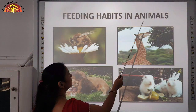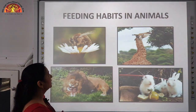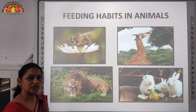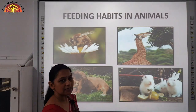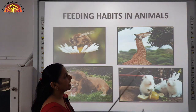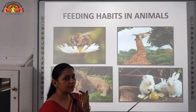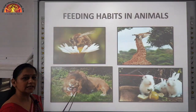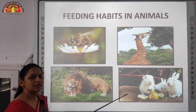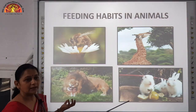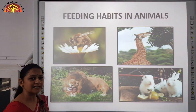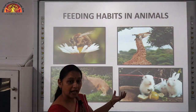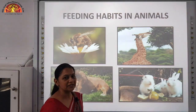Next topic is feeding habits in animals. Different animals have different types of feeding habits. Butterflies have a long and thin tube called proboscis through which they suck the nectar of flowers. Herbivores like zebra and giraffe have sharp front teeth to bite leaves and broad back teeth to chew plant food. Carnivores have sharp canines to tear out flesh. Carnivorous birds like eagle have a sharp pointed beak to tear flesh and sharp claws to catch prey. Rodents like rats and squirrels have sharp teeth to gnaw food and repeatedly bite it.